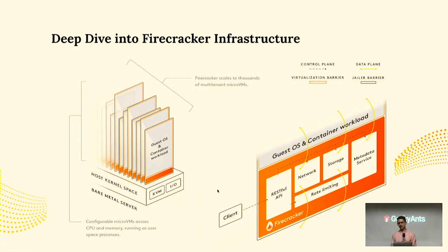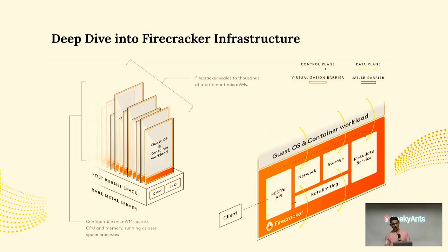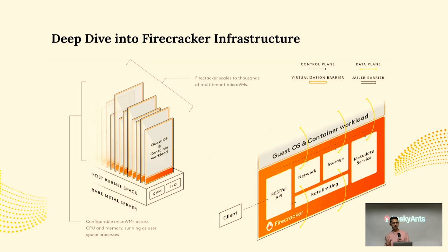Firecracker provides its own RESTful APIs with connections to rate limiters, so when we boot a micro VM we can specify the network type and the amount of storage assigned to it. With its metadata service, these RESTful APIs can also talk to the guest OS and container workload. Firecracker also enables another layer of security — a jail barrier that sits outside the virtualization barrier. If a hacker breaks the virtualization barrier, the jail barrier provides a second line of defense.